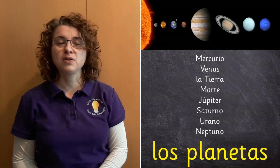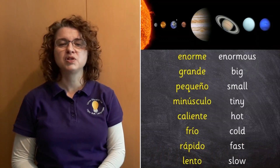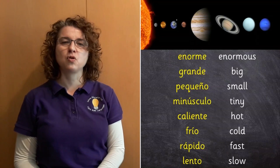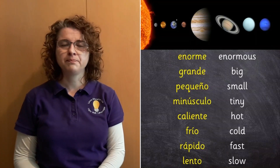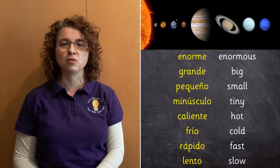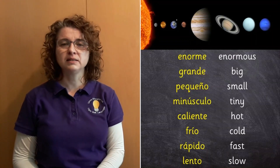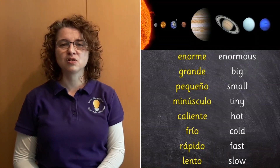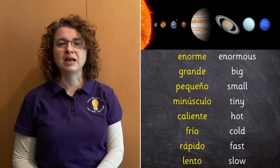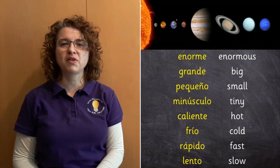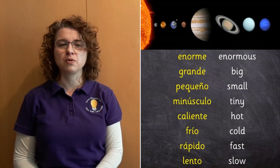So we're going to use eight different adjectives to describe the planets. The first four are all to do with size. So enorme is enormous. Grande is big. Pequeño is small. And minúscula is tiny. So you have going from the very, very big to the very, very small.